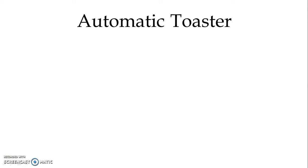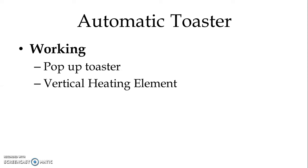Another type is the automatic toaster. Let us study the working of the automatic toaster — it is also known as a pop-up toaster. In the automatic toaster, we have a vertical heating element mounted, and there is a bread carriage in which two slices of bread are placed. The carriage can go up and down; the operating handle is brought down after placing the slice of bread, and the carriage goes down.